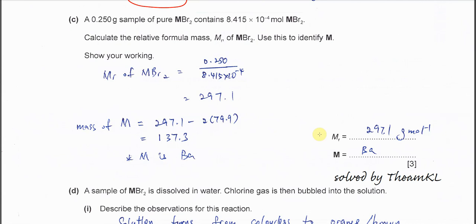A 0.25 gram sample of pure MBr2 contains 8.415 times 10^-4 mole of MBr2. Calculate the relative formula mass of MBr2 and after that identify M. First, you need to calculate the molar mass based on the moles and the grams that are given. We know that moles equal mass over molar mass. To get the molar mass, we use the mass over the mole.